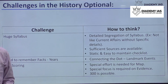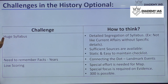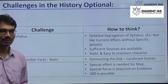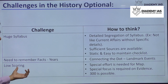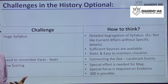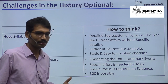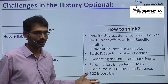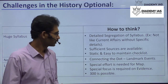These are the general problems we face with history optional: huge syllabus, many things to remember — facts, figures, and years — and the misconception that even after reading so much, it may not give a good score. But there is a possibility of getting good scores. This year, first rank came from history optional.